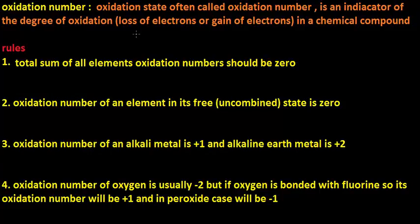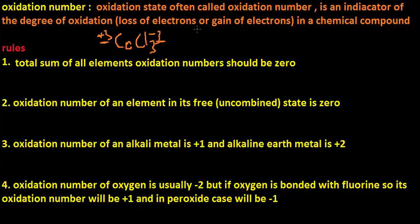Basically, oxidation number is an indicator of the degree of oxidation — loss of electrons or gain of electrons — in a chemical compound. For example, if we have cobalt chloride, chloride has a minus three oxidation state and cobalt has plus three. The plus three shows that cobalt has lost three electrons, and minus three shows that chloride has gained three electrons.